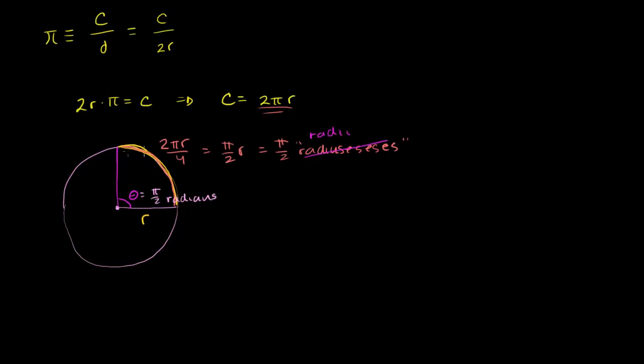So this arc length is pi over 2 radii, and it subtends an angle of pi over 2 radians.